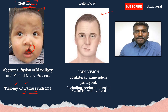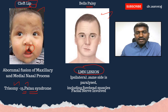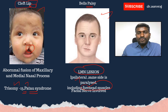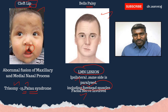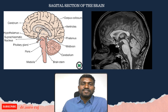This image shows Bell's palsy. It is a lower motor neuron lesion, affecting the ipsilateral side. It involves the forehead muscles and you will see facial nerve involvement.